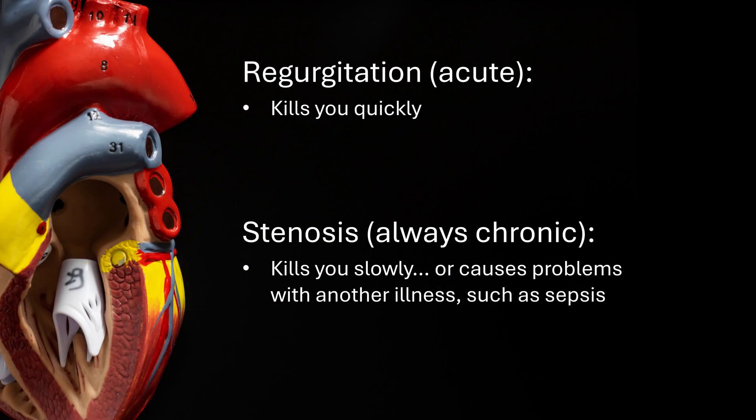Here are the basic concepts of valvular emergencies. Acute severe aortic or mitral regurgitation can kill you quickly. The valve leaflets don't coapt or come together, so a large amount of blood that was initially moving forward is now moving backwards. Compare that to valvular stenosis — you can't have an acute stenosis, so it's always chronic, and aortic stenosis kills you slowly. The valve leaflets are calcified and thick, which prevents blood from moving forward. However, both can lead to decreased cardiac output and cardiogenic shock.